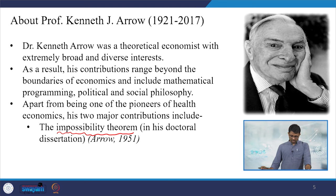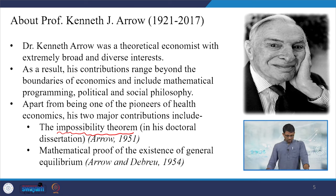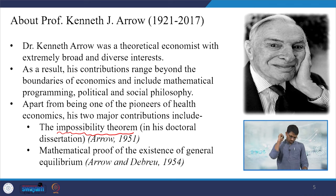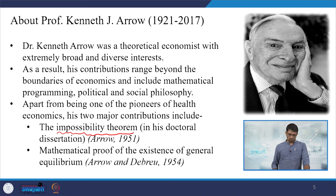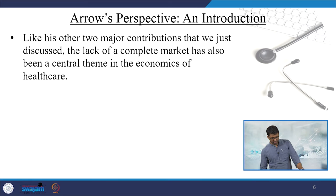Arrow's impossibility theorem is referred to the year 1951 as it was called his doctoral dissertation. The mathematical proof of the existence of general equilibrium was also attributed to Arrow and Debreu in the year 1954. These two — the existence of general equilibrium and the impossibility theorem — are considered to be his best contributions. We will clarify all such details in their respective chapters and units.